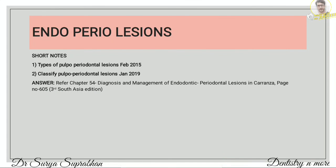Coming to endo-perio lesions. Questions asked include types of pulpo-periodontal lesions and classification of pulpo-periodontal lesions — both have the same answer. Refer chapter 54, Diagnosis and Management of Endodontic-Periodontal Lesions in Carranza, page 605. There is the Simon, Glick and Frank classification; you have to write the four classes.